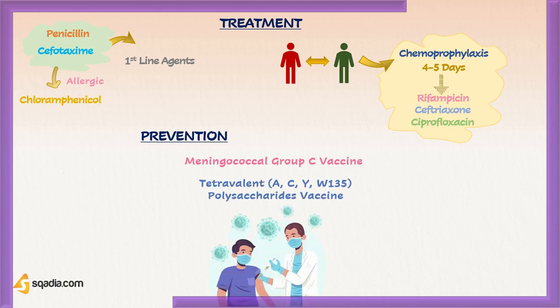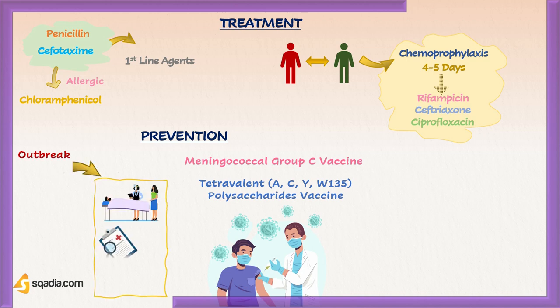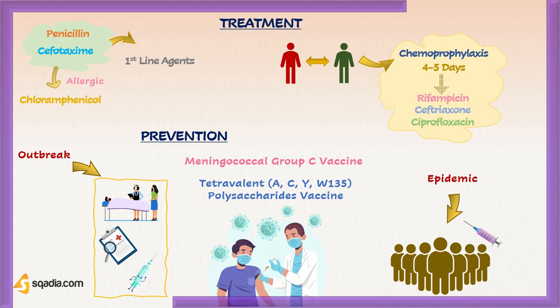Meningococcal group C vaccine and tetravalent A, C, Y, and W-135 polysaccharide vaccine are available for travelers to high-incidence areas, while a group B vaccine is being developed. In case of an outbreak, careful surveillance, early diagnosis, and immediate treatment of suspect cases is performed. If large-scale epidemics occur, mass vaccination of the entire population should be considered. This concludes the section on Neisseria meningitidis, with Neisseria gonorrhoeae to be covered in the next section.